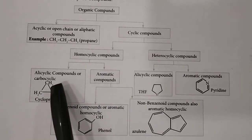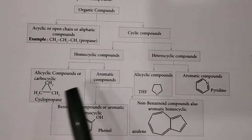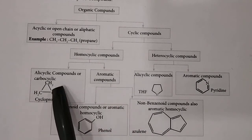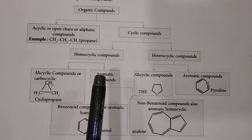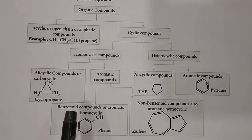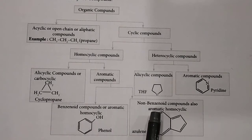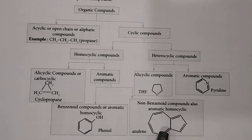So homocyclic compounds are subdivided into alicyclic and aromatic. Alicyclic examples include cyclopropane, cyclobutane, cyclopentane, and cyclohexane. Aromatic compounds are further divided into benzenoid — such as phenol — and non-benzenoid — such as azulene, which is a 7-membered ring fused with a 5-membered ring.